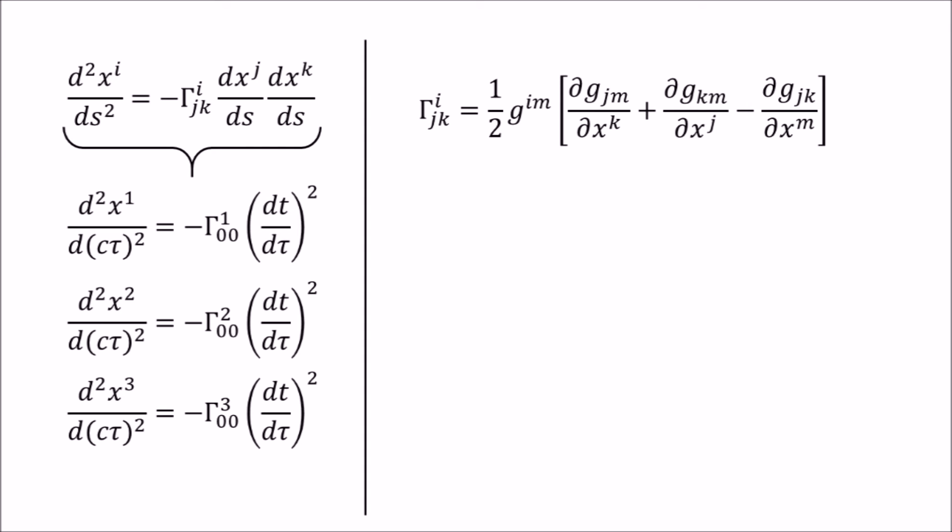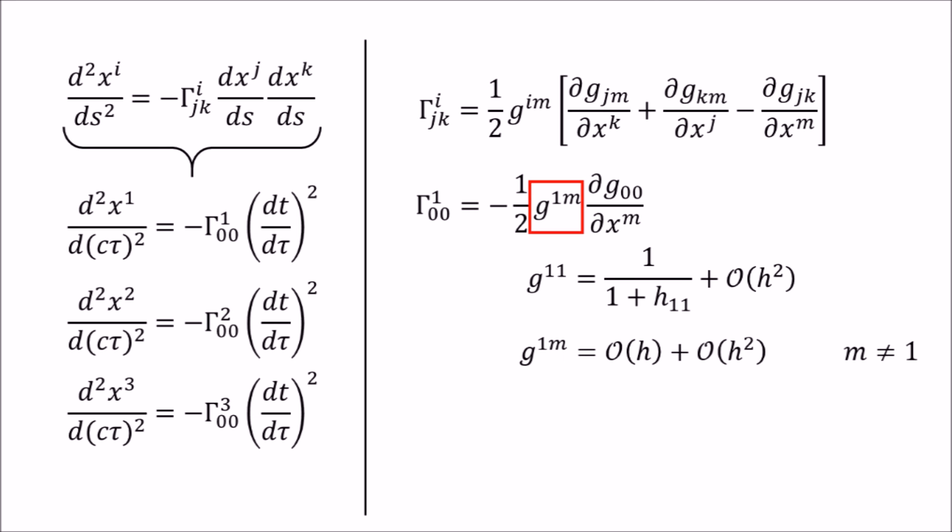Recall the dependence of the Christoffel symbol on a metric. The gamma 1, 0, 0 will look like this. Since our metric is independent of time, these two terms will drop out. The inverse of the metric looks like this, and this term is just the derivative of h. So, up to the lowest order on h, the Christoffel symbol looks like this.